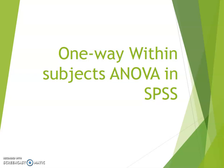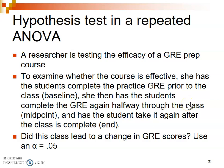The hypothesis we are going to test is: a researcher is testing the efficacy of a GRE prep course. To see if the course is effective, she has students complete a practice GRE before the course as a baseline measurement, then halfway through the course, and one last time at the end of the class. We're asked to use an alpha level of 0.05 to test this question.